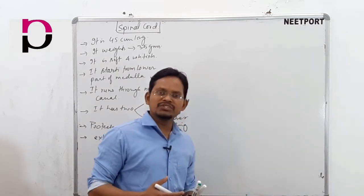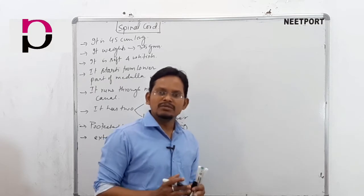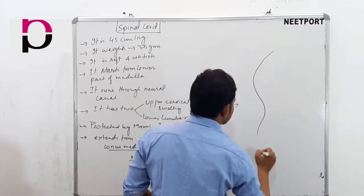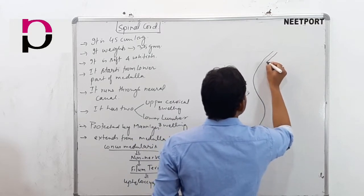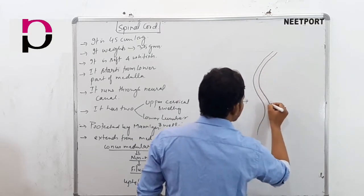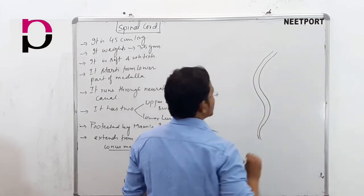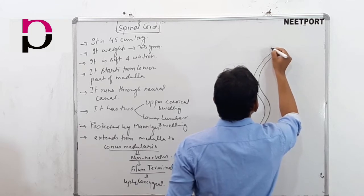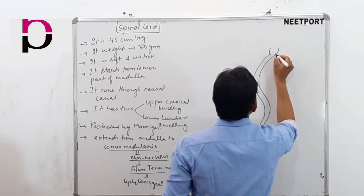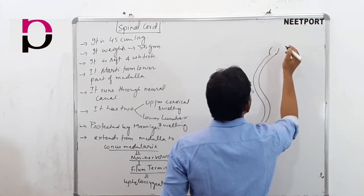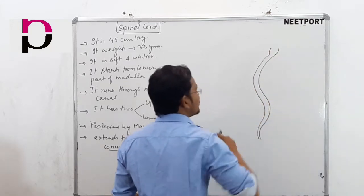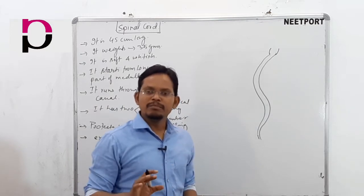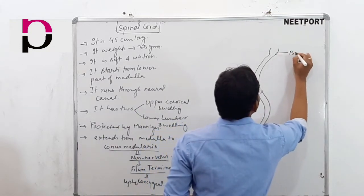When we discuss the vertebral column and draw its structure, we can see a structure which is called the brain stem. The brain stem consists of the pons, medulla, and mid-brain.